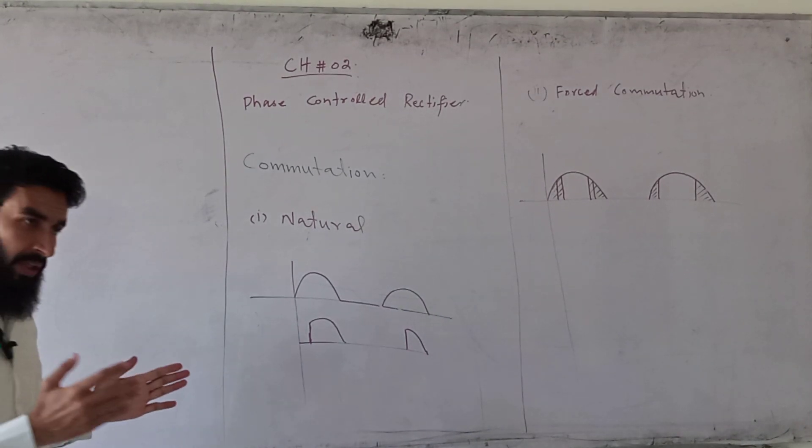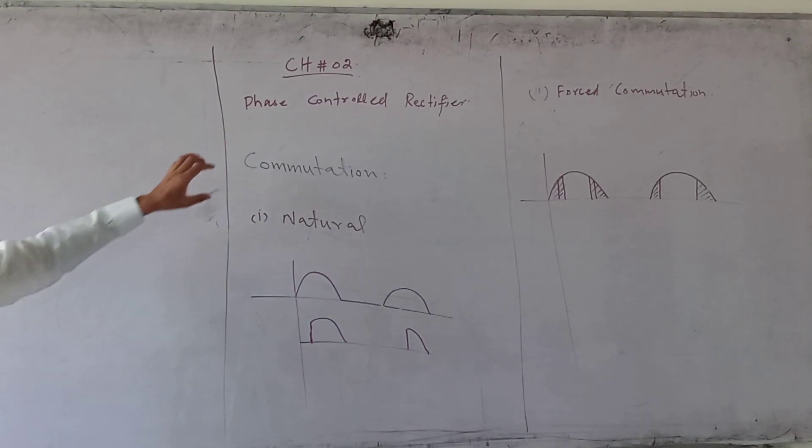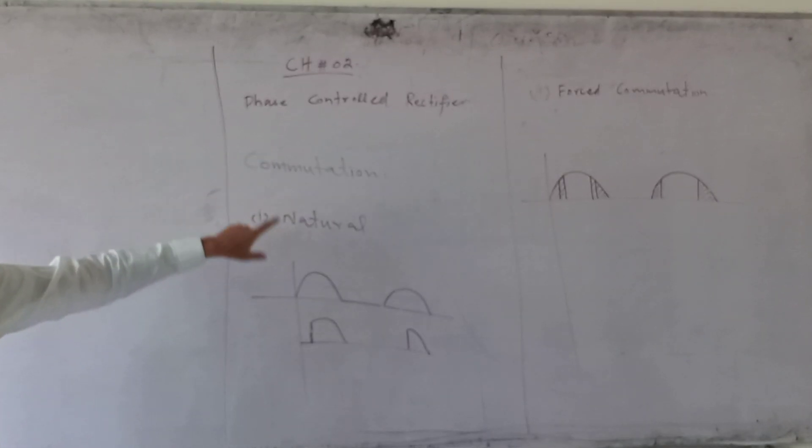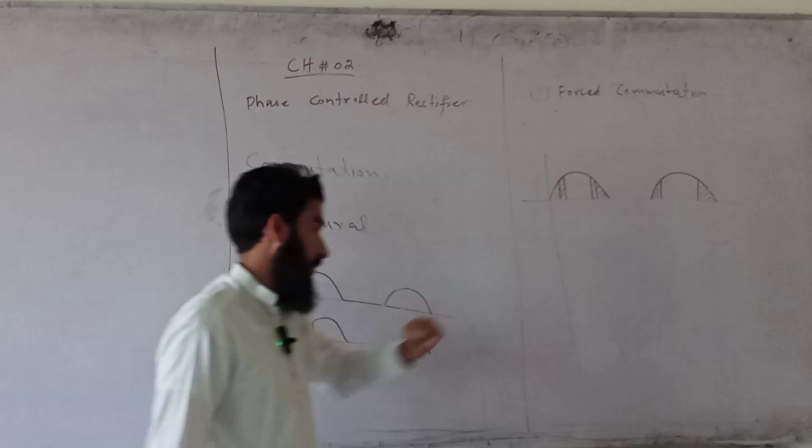AC to DC conversion can be done through different methods. The main types of commutation are natural commutation and forced commutation.